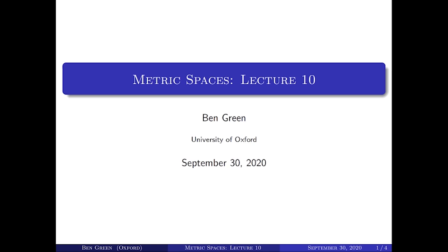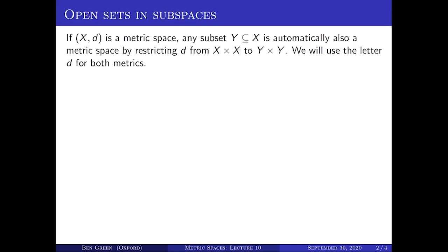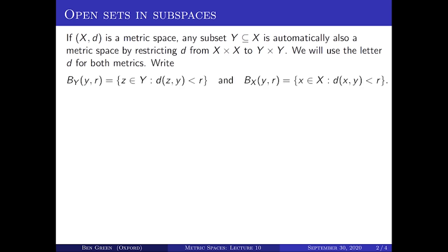This is lecture 10 of the metric spaces course. In this lecture, we're going to look at just one topic: how the notion of open set and of open ball interact with the idea of a subspace of a metric space. Let X be a metric space with metric d. If Y is a subset of X, you can give Y the structure of a metric space by restricting the distance function to Y — more formally, restricting d from X×X to Y×Y. It's completely standard to use the letter d for both metrics, with no real danger of confusion.